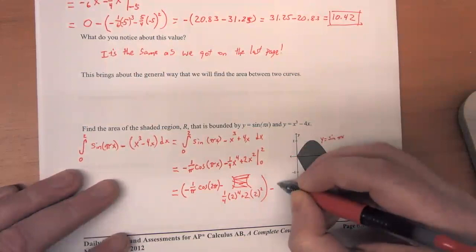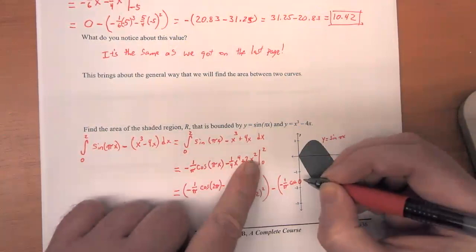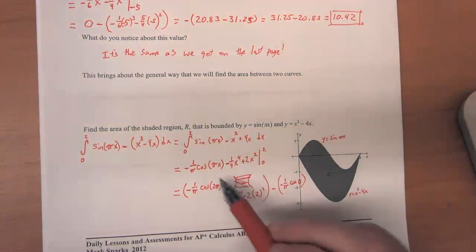And then we're going to subtract out all of this with 0 plugged in. And so that's going to be negative 1 over pi times the cosine of 0. And then these two terms are going to disappear because those are both equal to 0 at x equals 0.